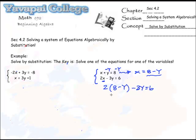And so this is what I get, and then I need to use my distributive property, and I get 2 times 8 to clear the parentheses, 16 minus 2y minus 3y equals 6.